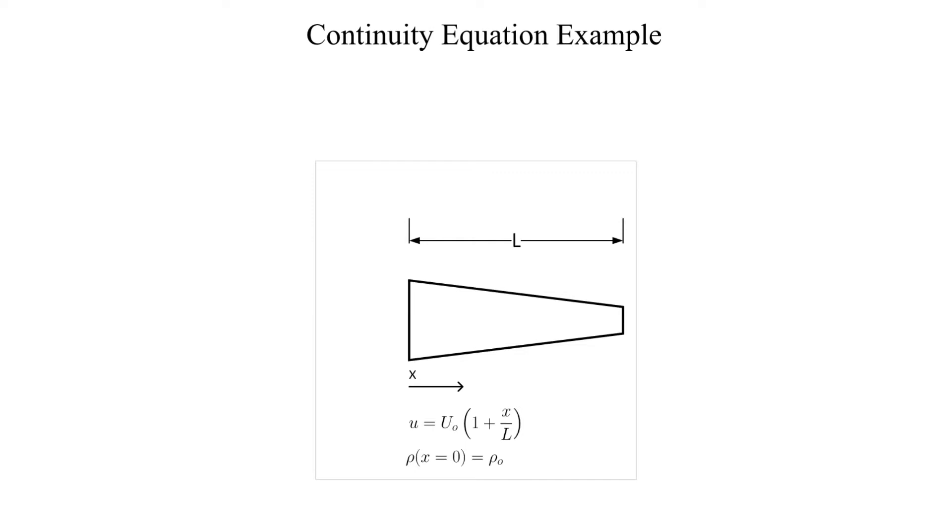The velocity is increasing with x as expected for a converging nozzle. In gas dynamics with compressible flow we learn that this is only true if the flow is subsonic.